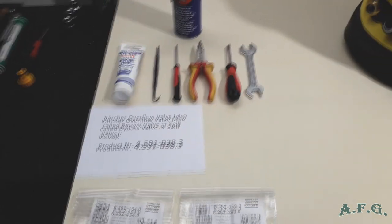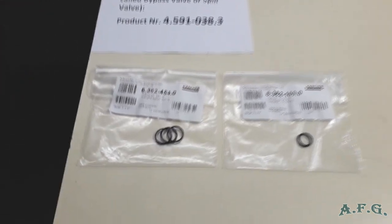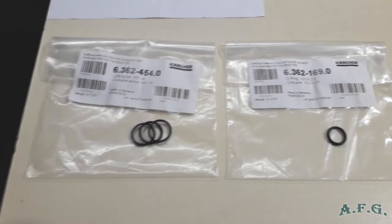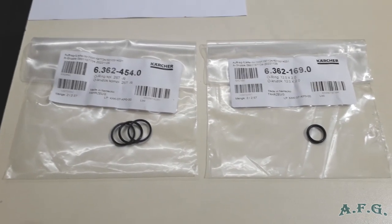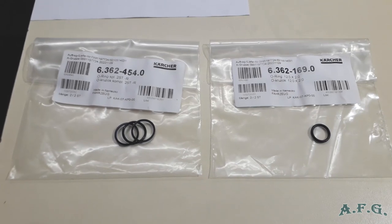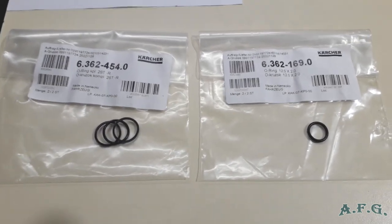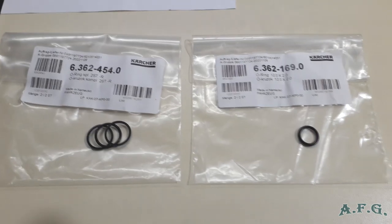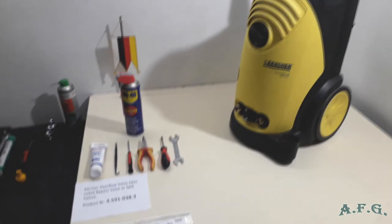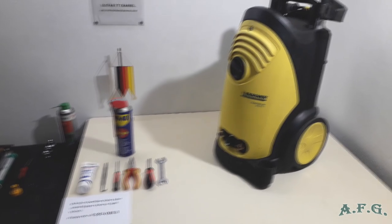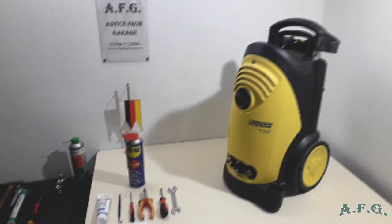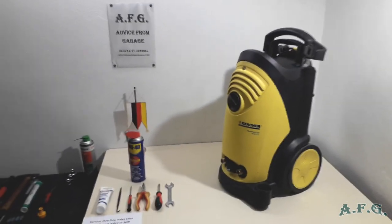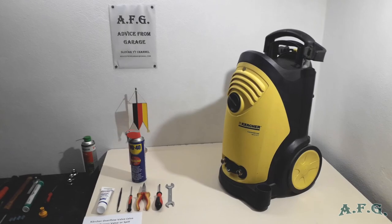I'll change the o-rings. Here you can see the o-rings. The positive thing is that you can buy in the Karcher e-shop only the o-rings which cost only a few euros. There are two ways how to fix this overflow valve: either you replace it completely, or you just replace the o-rings. So in this case we will replace only o-rings.